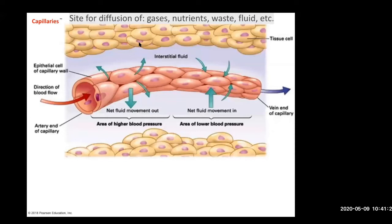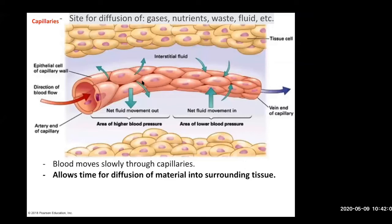When you look at a generic cartoon diagram, it helps to think of something concrete — your biceps, your heart, your lungs. Here are the cells of the body's tissues, the interstitial fluid, and a capillary going in. Blood flow is pushed in through the arterial end of the capillary bed, moving slowly, and this allows for diffusion of materials leaving the blood vessels. There's a little bit of pressure pushing it through, so the net fluid movement is out — because pressure inside the vessel is higher than outside.